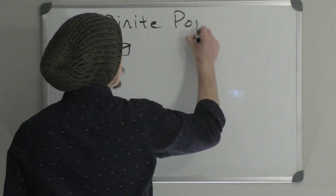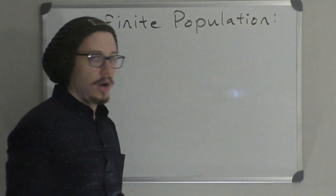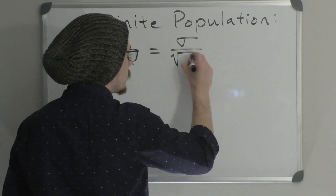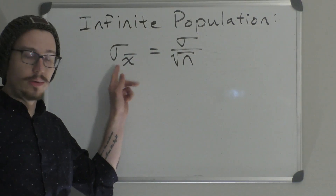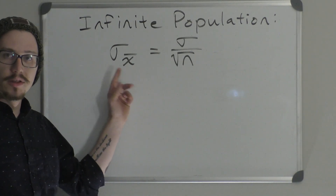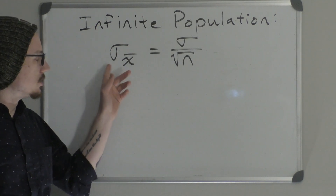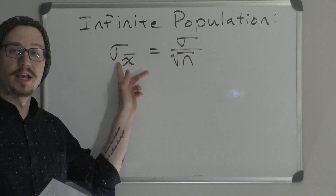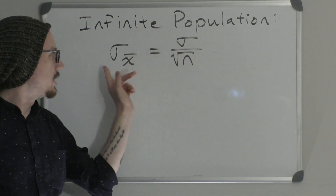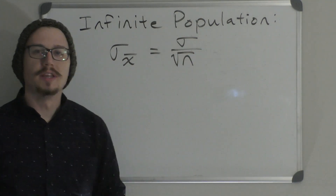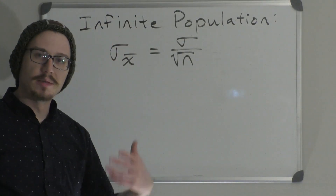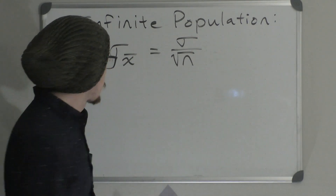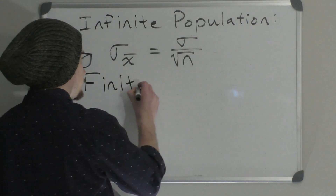First, assuming an infinite population, the standard error is sigma sub X-bar equals sigma over the square root of n. Here, sigma sub X-bar is the standard deviation of the sample mean (the standard error), sigma is the standard deviation of X, and n is the sample size. This is the formula for an infinite population assumption.